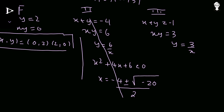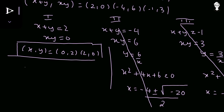For Case 3: xy = 3 gives y = 3/x. Substituting into x + y = −1 yields x² + x + 3 = 0. Using the quadratic formula: x = (−1 ± √(1 − 12))/2 = (−1 ± √(−11))/2. The discriminant is −11, so again the solutions are imaginary. Case 3 also gives no real solutions.